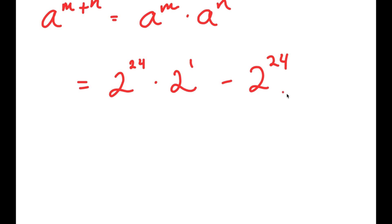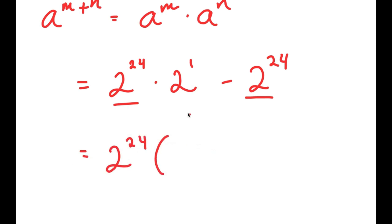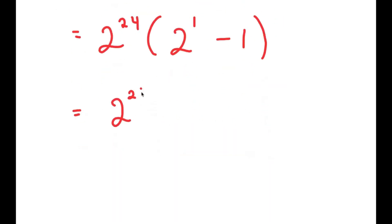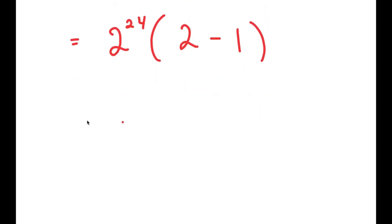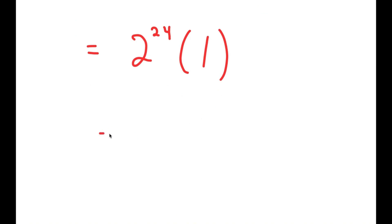From here, I'm going to factor out 2 to the power of 24, because both of these terms have 2 to the power of 24 in them. So I get 2 to the power of 24 times 2 to the power of 1 minus 1, which is equal to 2 to the power of 24 times 2 minus 1, which is equal to 2 to the power of 24 times 1. And anything times 1 is just equal to itself, so this is just equal to 2 to the power of 24.